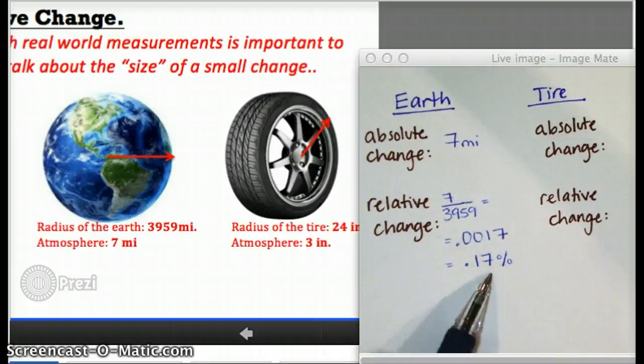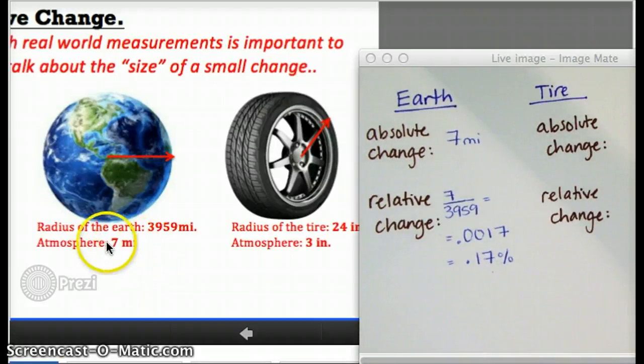This is saying that actually, seven miles may seem like a huge atmosphere, but when you put it in the context of the earth's size, it's a tiny little additional distance.